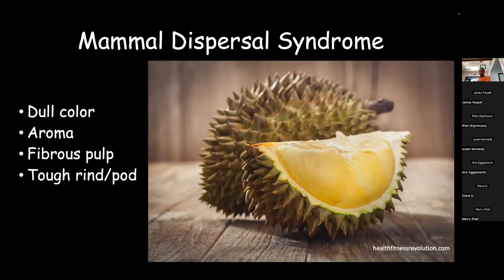And of course the tough rind and pod. It doesn't make a lot of sense for a plant to invest the energy making that thick rind just so a bird can come and peck a hole in it and eat the seeds. So if it has a really thick rind, chances are it's probably something meant to be eaten by something big with a large mouth and strong jaws that'll just crunch up that rind.